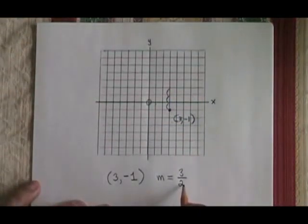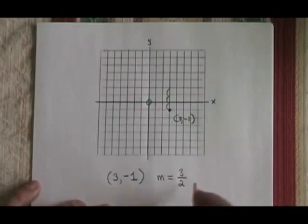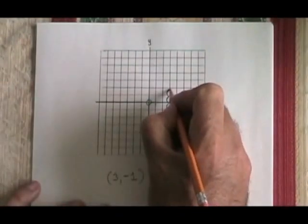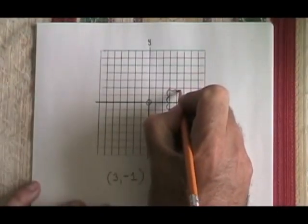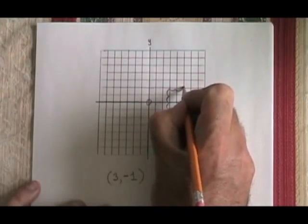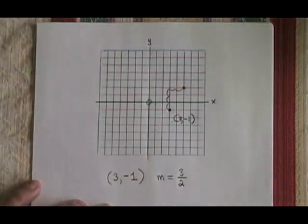Run is left or right movement, but it will always be to the right. So from here, I go 2 spaces to the right. What I arrive at is another point that I know must be on the straight line I'm graphing.